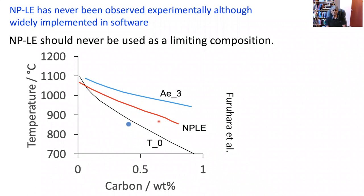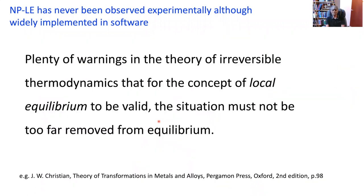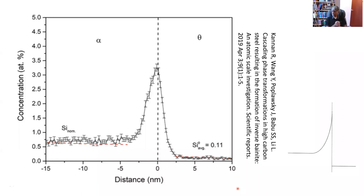There are plenty of warnings in the theory of irreversible thermodynamics, which is used to justify the assumption of local equilibrium, that the situation must not be too far removed from equilibrium. In other words, when transforming at high supersaturation you cannot assume local equilibrium. This is beautifully described in Jack Christian's 'Theory of Transformations in Metals and Alloys' on page 98.